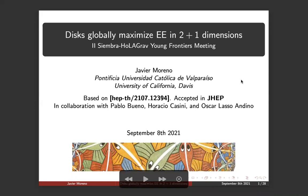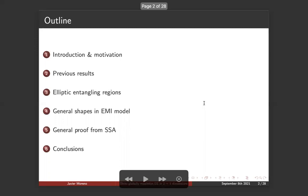Let us start with the last talk of the day and actually of the meeting. Javier Moreno is going to be talking about disks globally maximize entanglement entropy in two plus one dimensions. Thank you very much for the introduction and for allowing me to present this work that has been done together with Pablo Bueno, Horacio Cassini, and Oscar Lazo and Dino. We put it on archive two months ago and it was recently accepted in J-Hep.